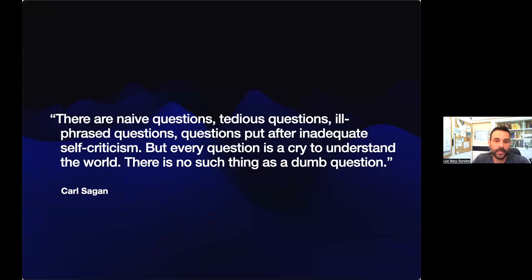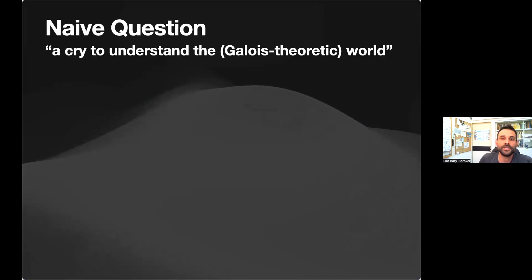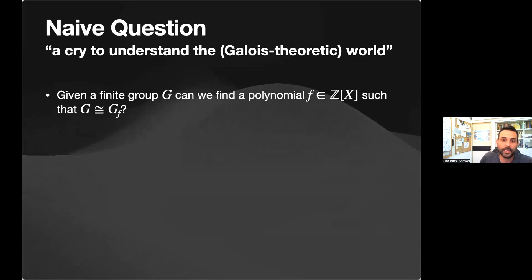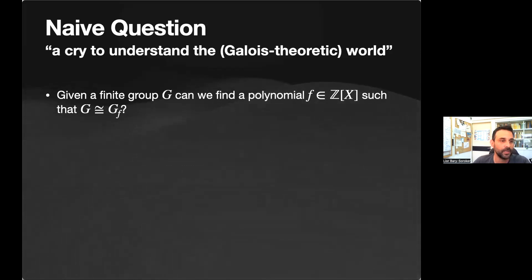I like this quote of Carl Sagan: 'There are naive questions, tedious questions, ill-phrased questions, questions put after inadequate self-criticism — but every question is a cry to understand the world. There are no dumb questions.' In this talk, our naive question is a cry to understand the Galois-theoretic world. It asks a very simple question: given a finite group G, can we find a polynomial such that G is the Galois group of that polynomial?